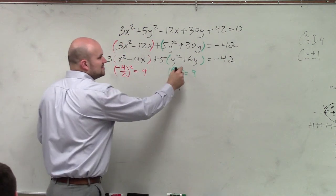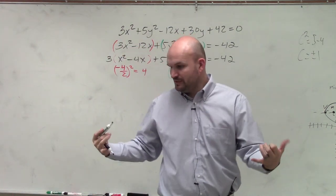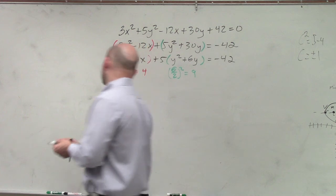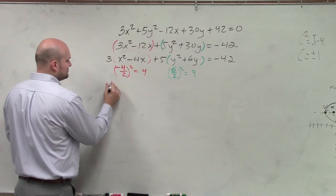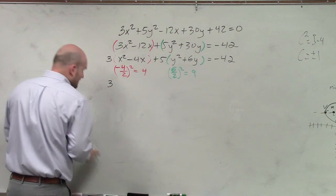So those are the values that complete my square. Those values create a perfect square trinomial. And that's so important because I can take perfect square trinomials and factor them down. So when I add them inside my parentheses, it looks something like this.